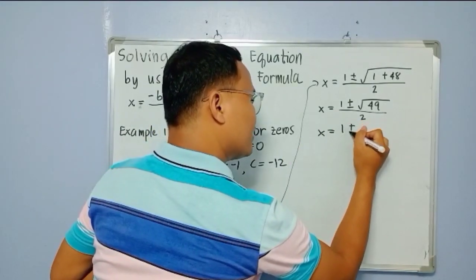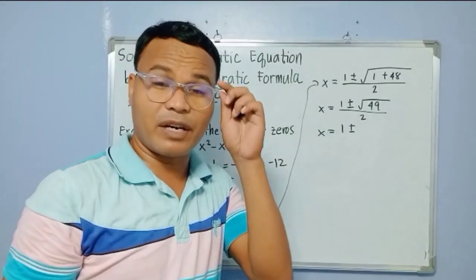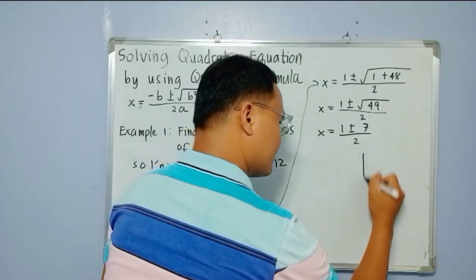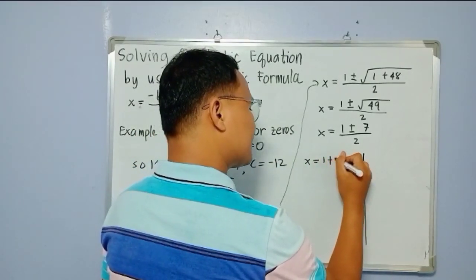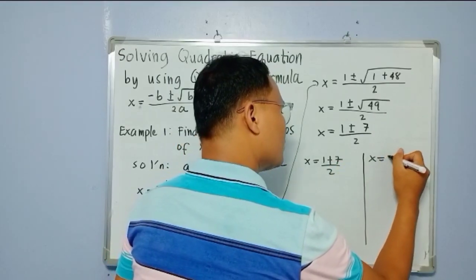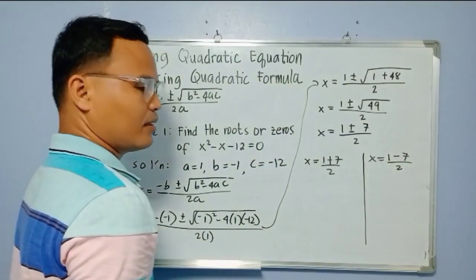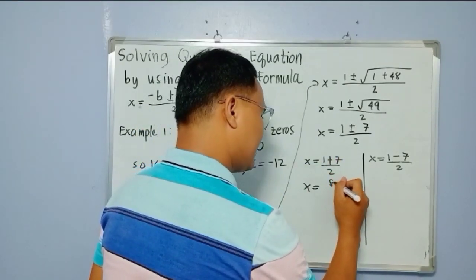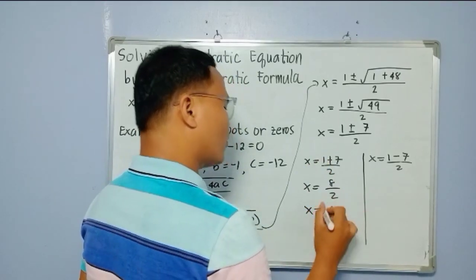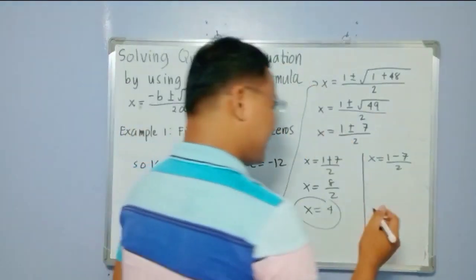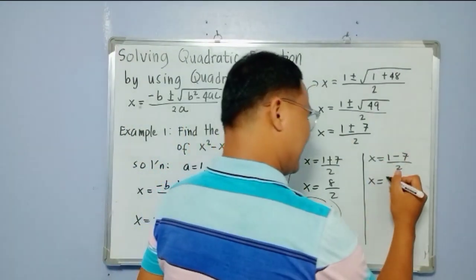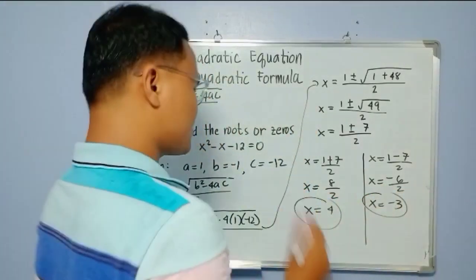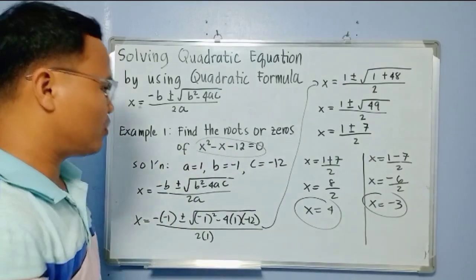So x equals 1 plus and minus the square root of 49, all over 2. The square root of 49 is 7, since 49 is a perfect square. So we have two values: x equals 1 plus 7 over 2, and x equals 1 minus 7 over 2. That gives us 8 over 2 equals 4, and negative 6 over 2 equals negative 3.